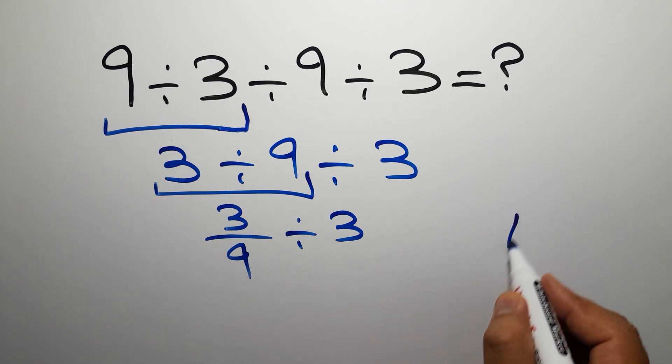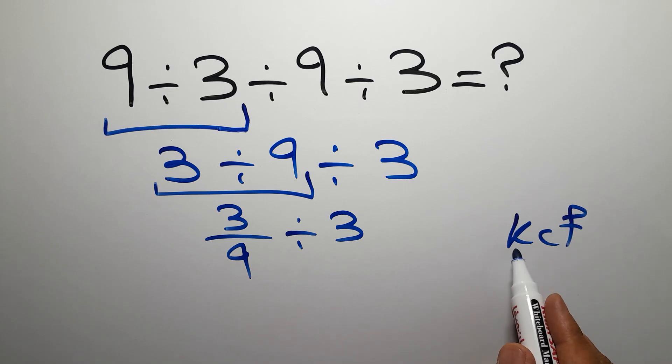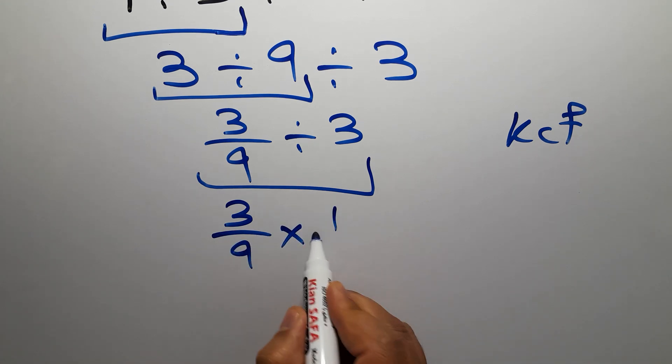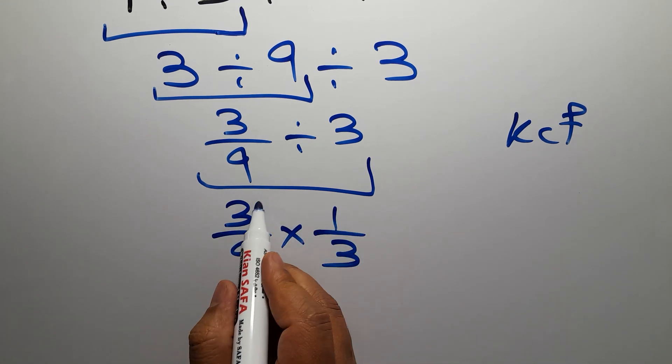K stands for keep, C stands for change, and F stands for flip. Keep the first fraction, change division to multiplication, and flip the second fraction. We can write 3 over 9, then times 1 over 3.